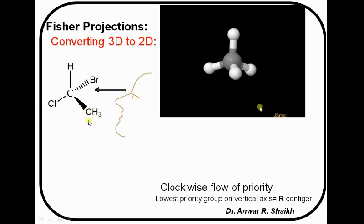The darkened bond indicates that it is coming towards us. And the bromine is represented by the dashed lines or dashed bonds, indicating that it is going away from the plane. It can be represented in this way. This is the CH3 group coming towards us. This is the bromine that is going away from us. And this is the chlorine. It is hydrogen.